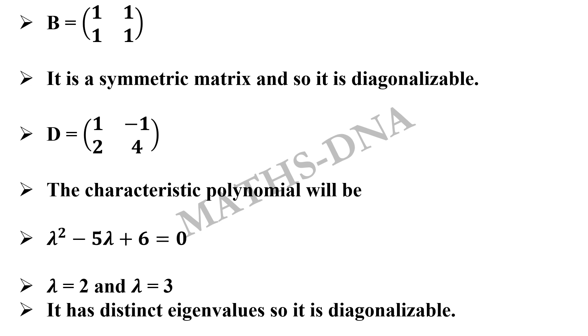For example, you can take any identity matrix. So option B and option D both are diagonalizable.